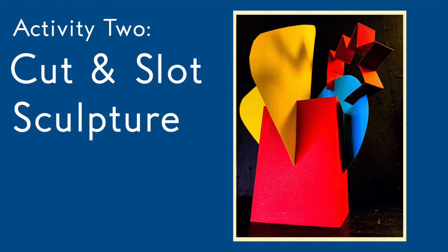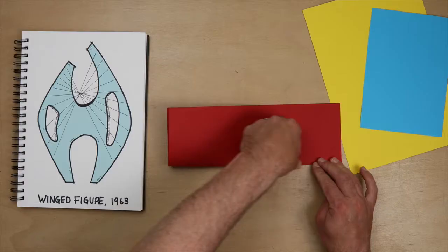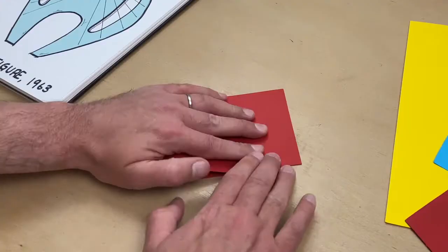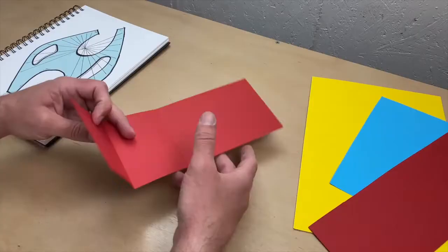Okay, the cut and slot sculpture is more about experimenting, so don't worry if yours is different. In fact, it should be. Take another piece of card and fold and cut it in half lengthways. Then fold it in half four more times to create the stable base of the sculpture.